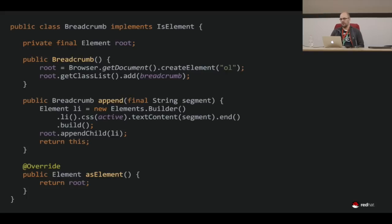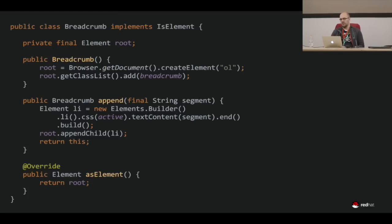Here's an example of a custom element. We have a small interface called isElement — similar to the isWidget interface from the GWT API, but as a counterpart for the Elemental side. All you have to do is implement the asElement method, which returns the root element of your component. It can be simple — like an OL tag with nested LI elements — or very complex. In this case it produces a nice-looking breadcrumb.